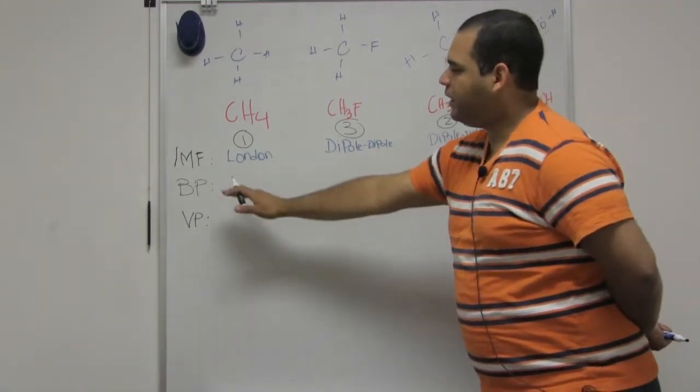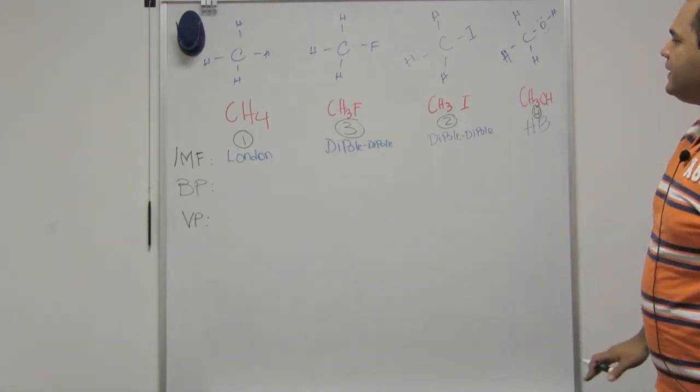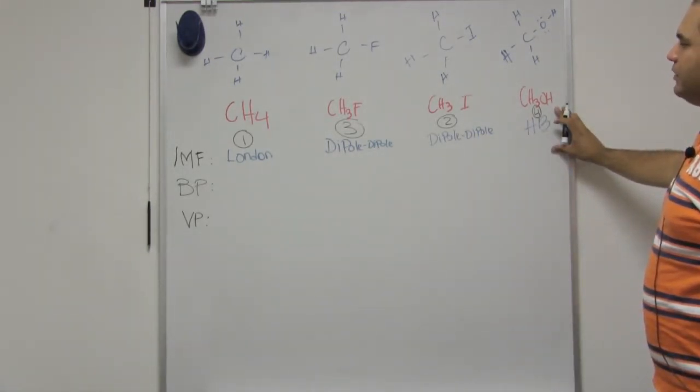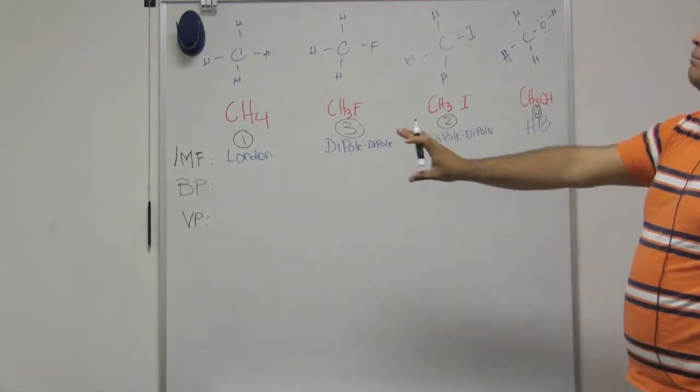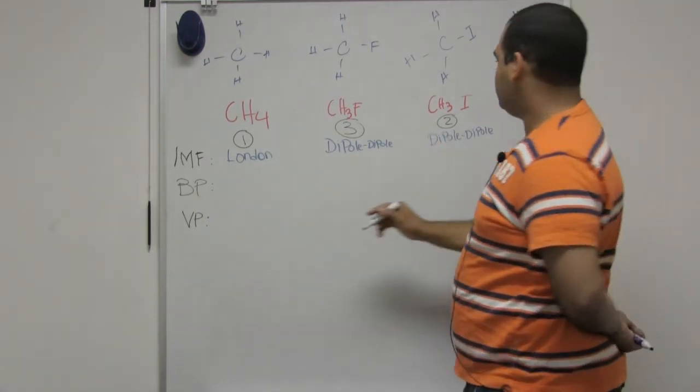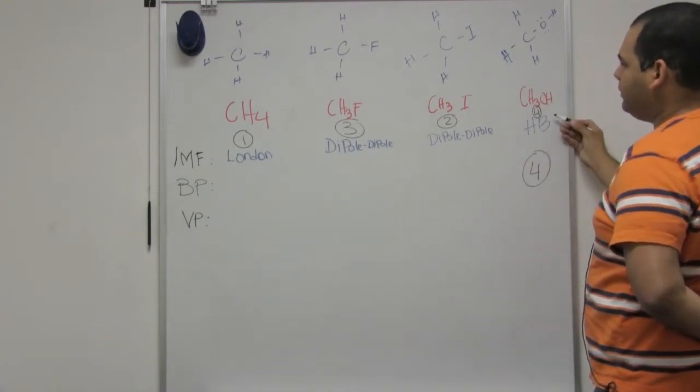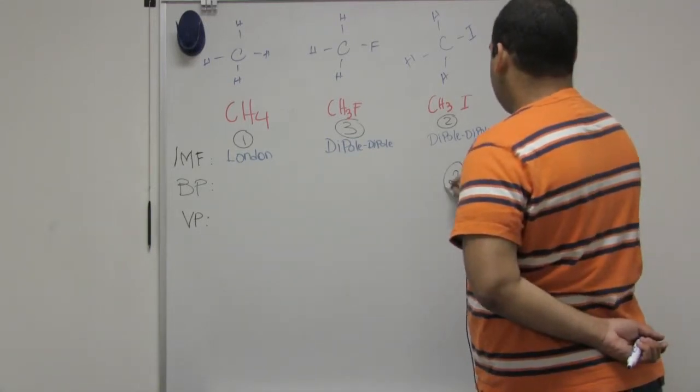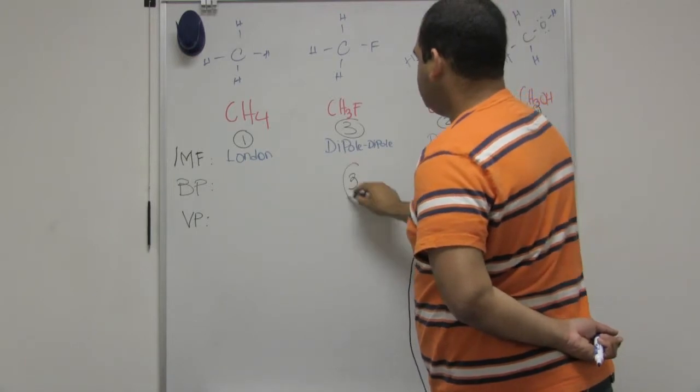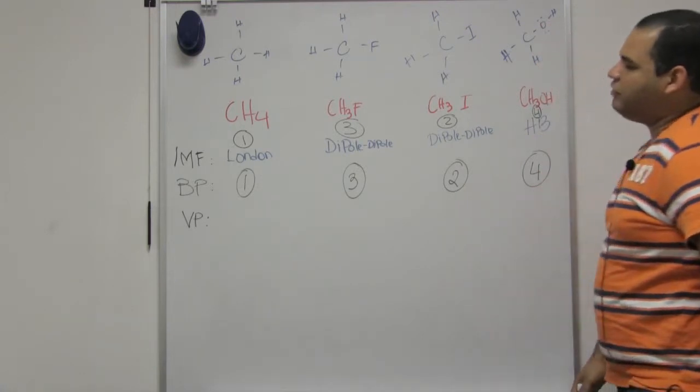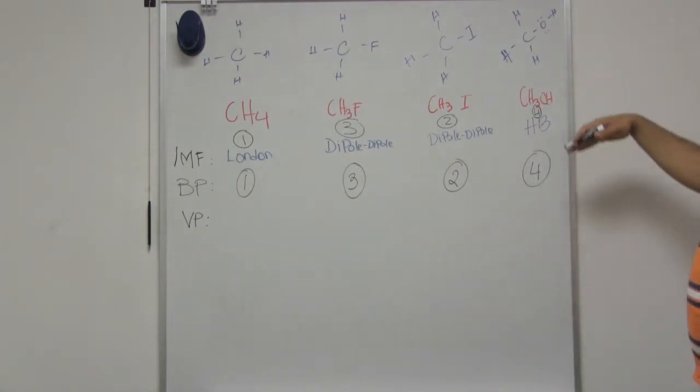Now, I'm assigning the boiling point. I know that as my intermolecular force is stronger, my boiling point will be stronger. So, this would be number four because it has a stronger intermolecular force. It would be the same thing as before: weaker has a lower boiling point, stronger intermolecular forces has the highest boiling point.